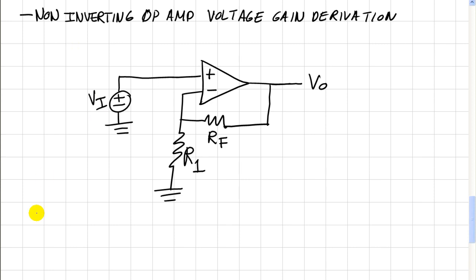So using the first rule, that is that the voltage at the inverting input is equal to the voltage at the non-inverting input. And that would be these two points.